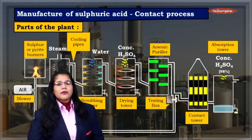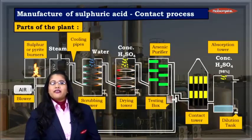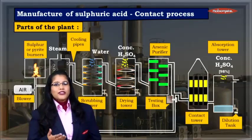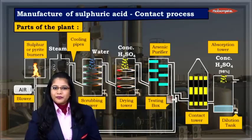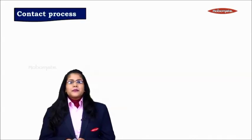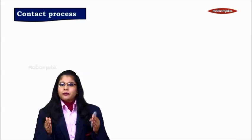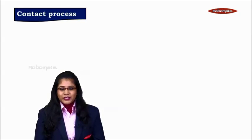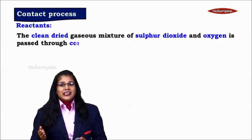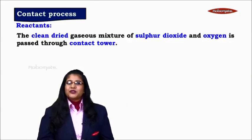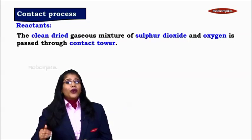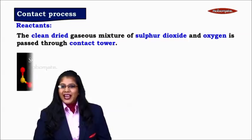After absorption by sulphuric acid, it is then finally diluted in the dilution tank to the concentration which is required. This is the entire setup of the plant. Now let us begin with the main process, that is the contact process. The main reaction happening here is the clean and dry gaseous mixture of sulphur dioxide and oxygen which is passed through the contact tower.